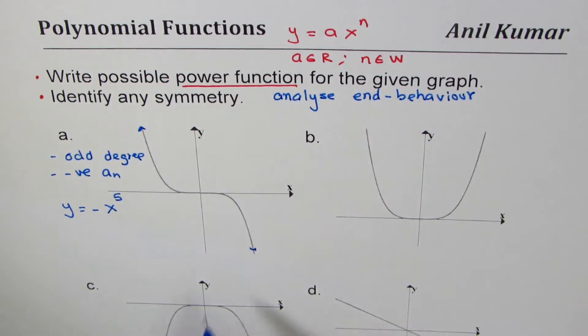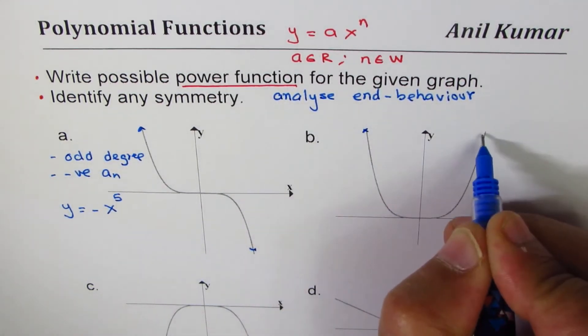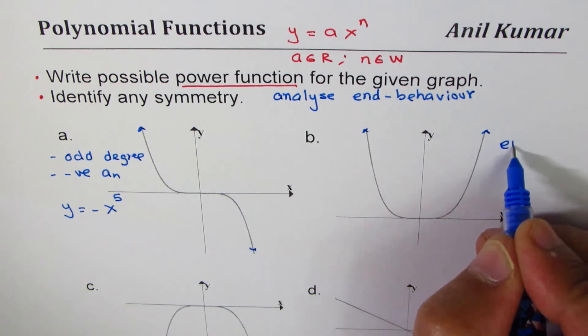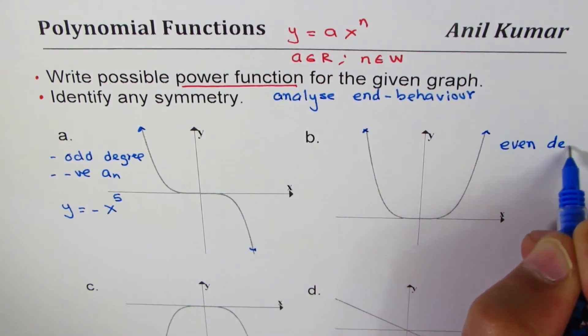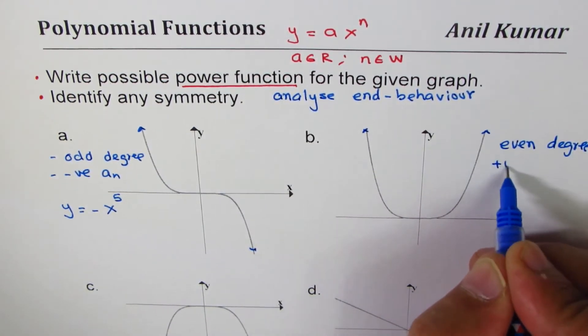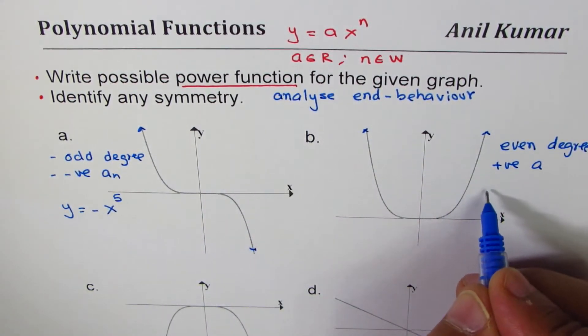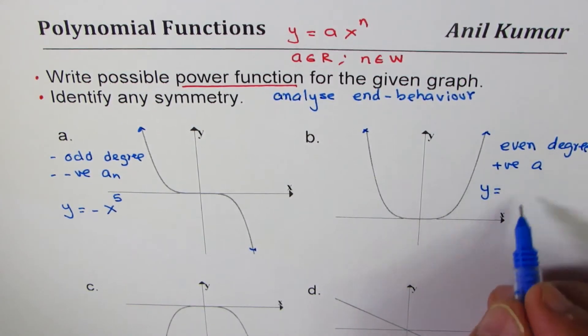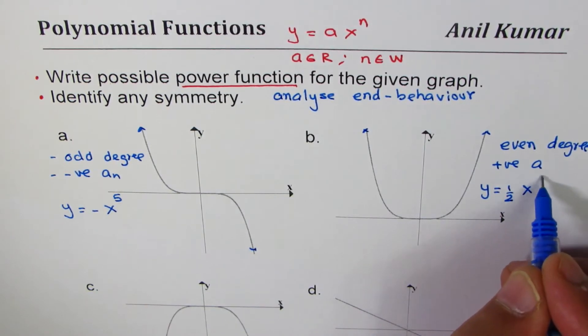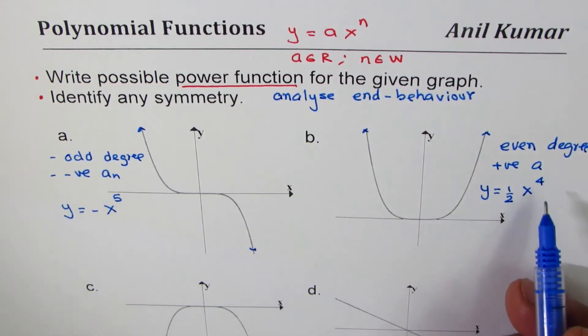Now based on this I'd like you to find appropriate equation for the next graph. Well here what we observed, both are same side, so that means even degree and positive value of a. And we write this equation as y = (1/2)x^4. It could be 2, 6, whatever but it has to be even degree since both are on the same sides.